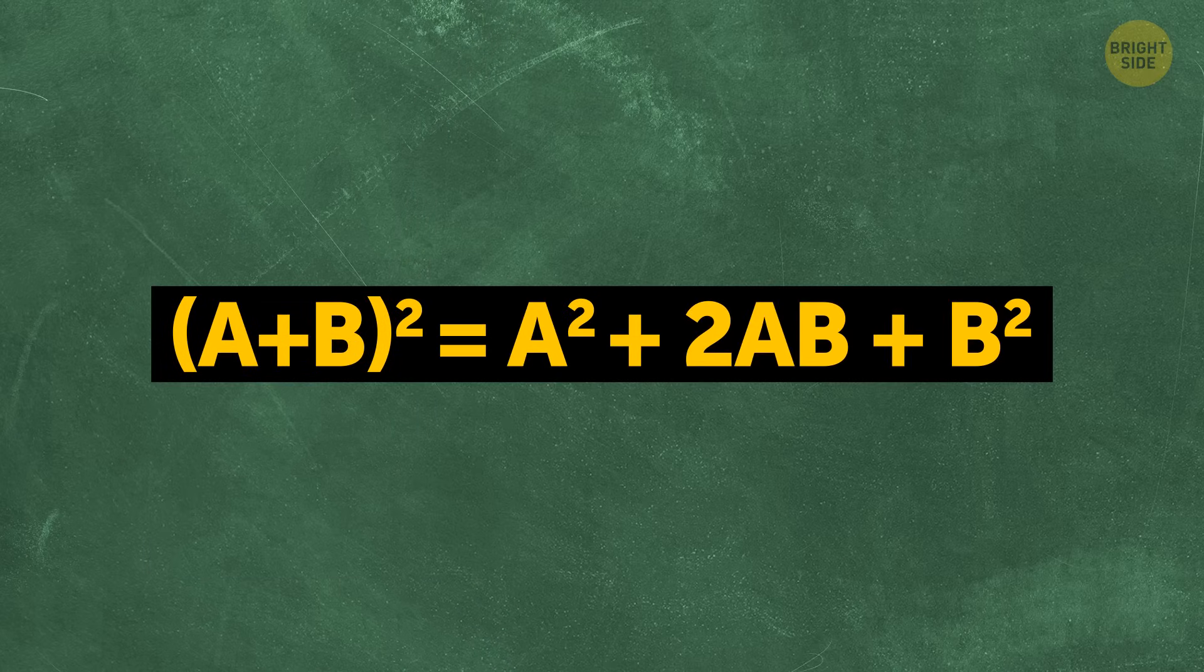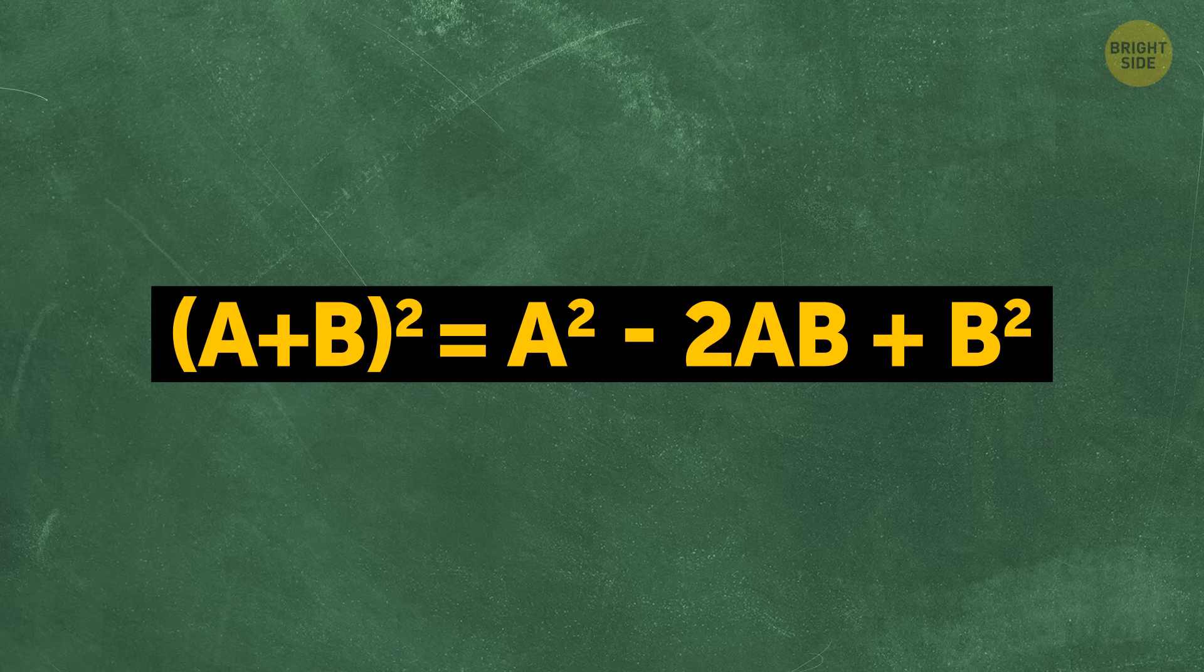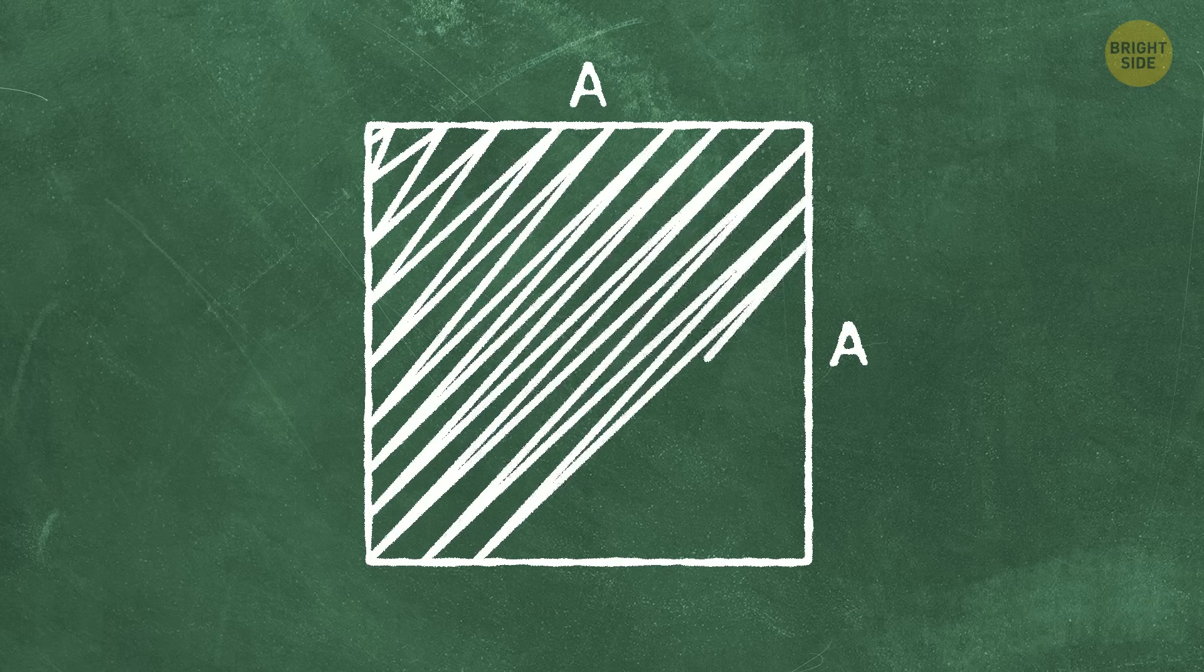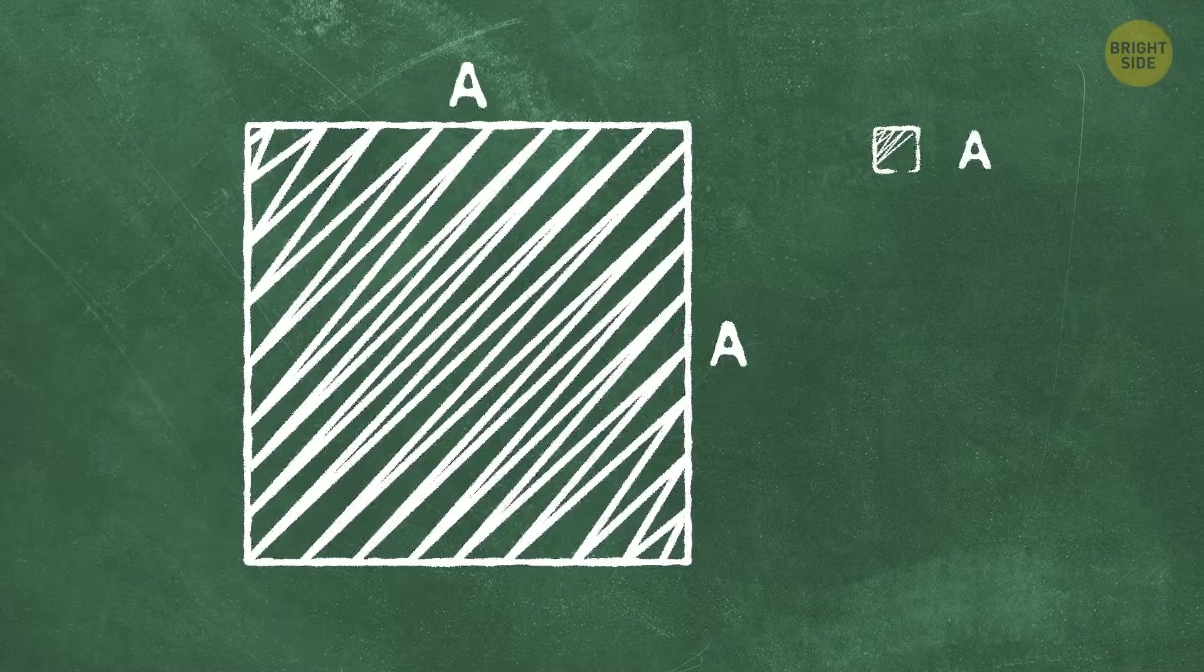Now, let's have a visualization of a similar formula, but with a minus. a minus b squared is equal to a squared minus two by a by b plus b squared. We'll start with a square with a side a. So, the area of the square is, without a doubt, a squared.